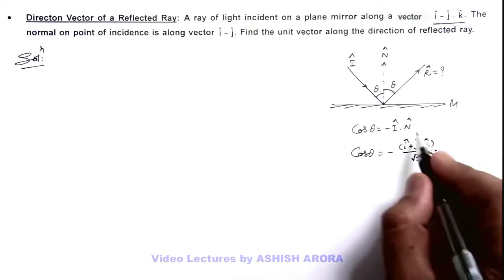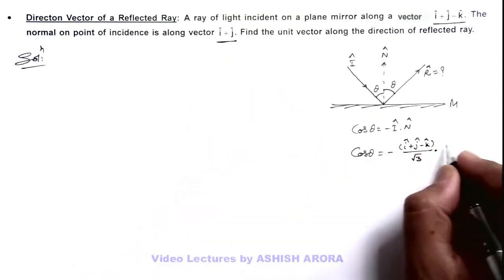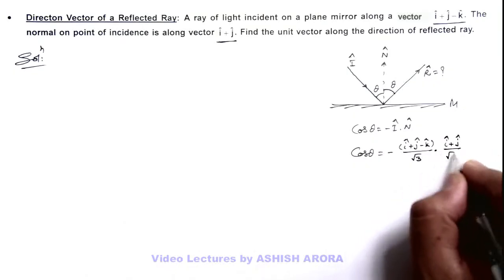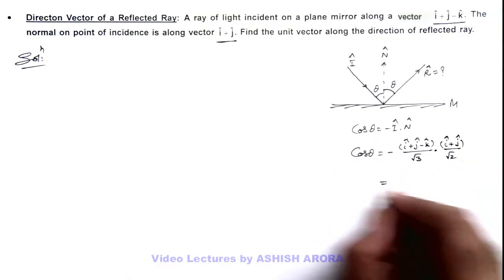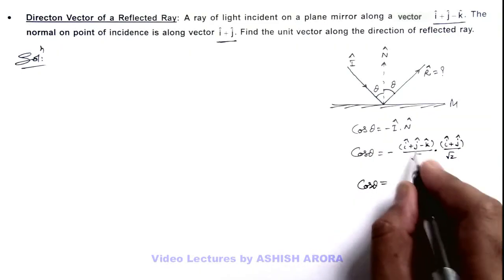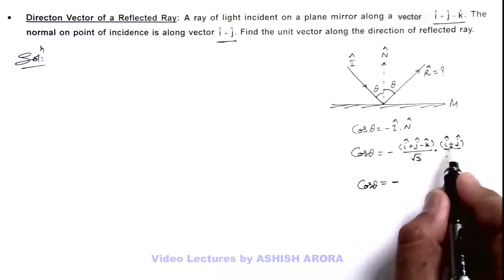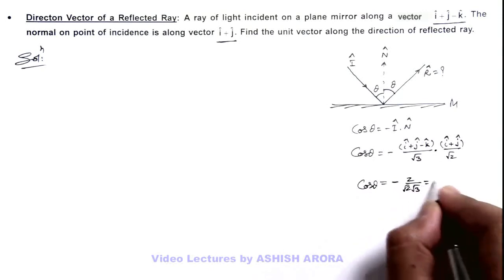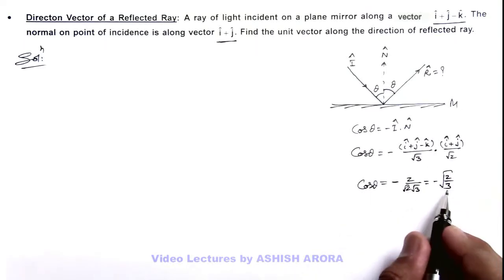We take the dot product with the unit vector along the normal direction, which is (î + ĵ) / √2. Taking this dot product, the value of cos θ we get is negative of 2 divided by √2 × √3, which is −√(2/3). So this is the value of cos θ.